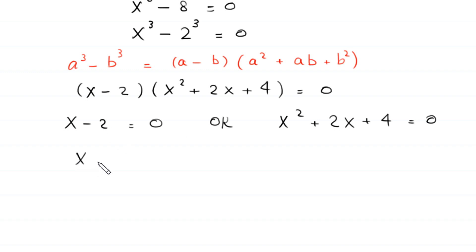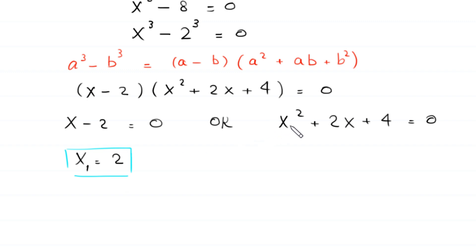From x minus 2 equals 0, we get x equals 2. This is the first solution. To find the other two solutions, we solve the quadratic equation x² + 2x + 4 equals 0. This is not factorable, so we use the quadratic formula.